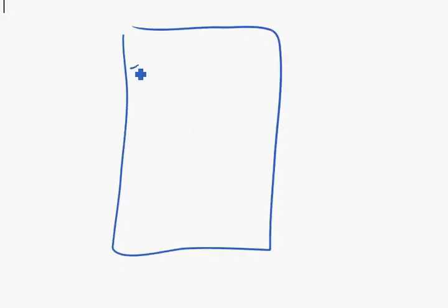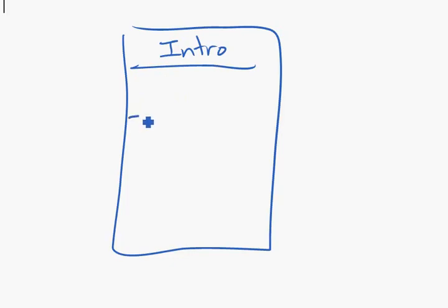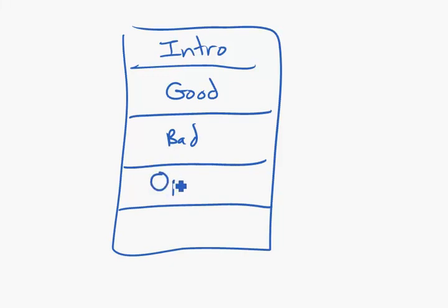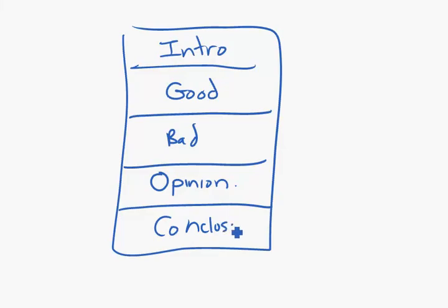The first thing you will do is plan out your essay. I will have an introduction. I will talk about the good features of my topic, then the bad features. I will then give my own opinion — we call this an evaluation, weighing up the good and the bad. I will then have a conclusion. You plan it out before you start.